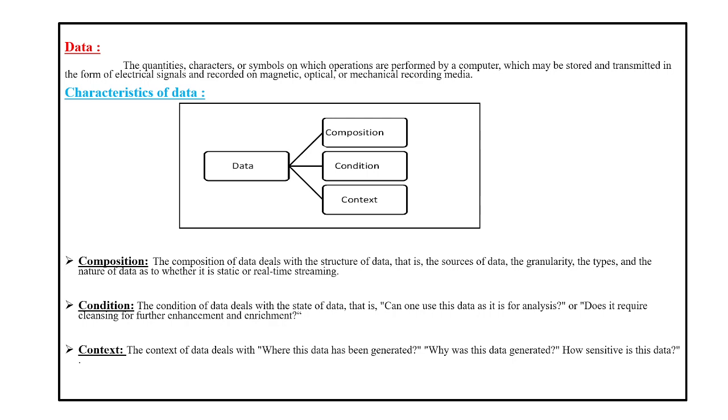This raw data or processed data can be stored, and not only just stored, we can also transmit this particular data or information as electrical signals, and even we can record them on magnetic, optical, or mechanical recording medias. So this is called data.